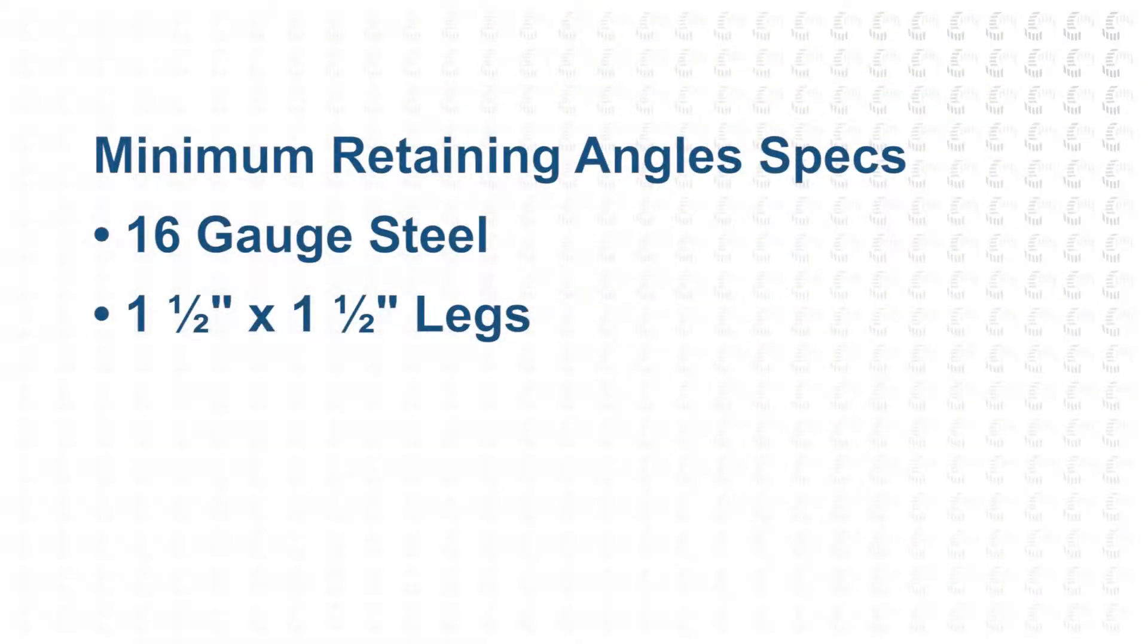For a Dayton damper installation, the retaining angles must be a minimum thickness of 16 gauge steel and have minimum one and one half inch by one and one half inch legs.